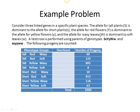Consider three linked genes in a specific plant species. The allele for tall is big S, dominant to little s for short. A second gene for flower color: big Y indicates red, little y indicates yellow. And a third gene W, where big W is waxy leaves and little w is soft leaves.